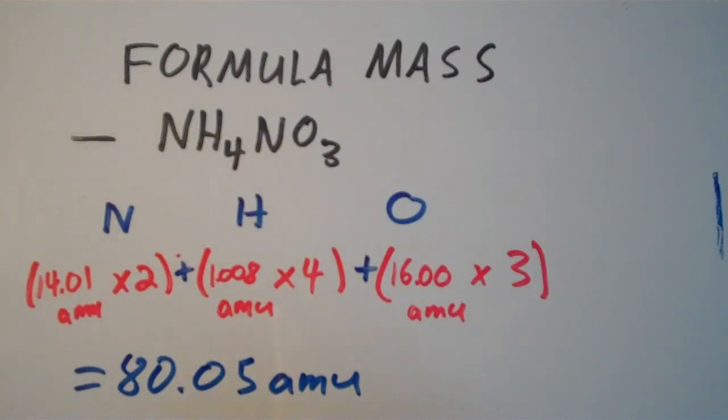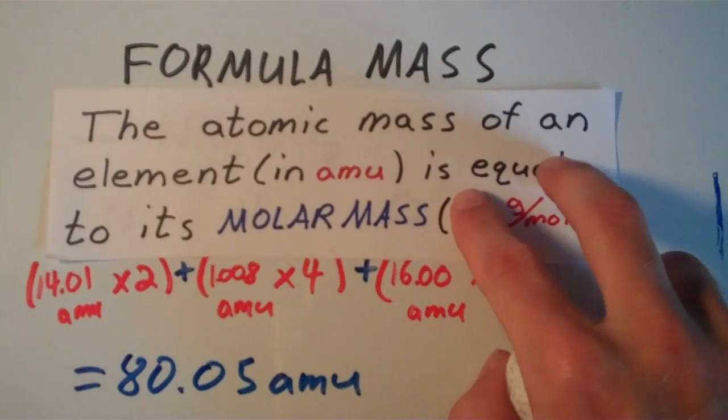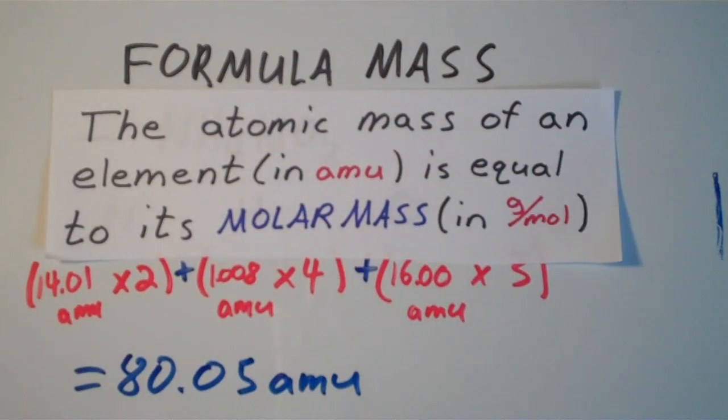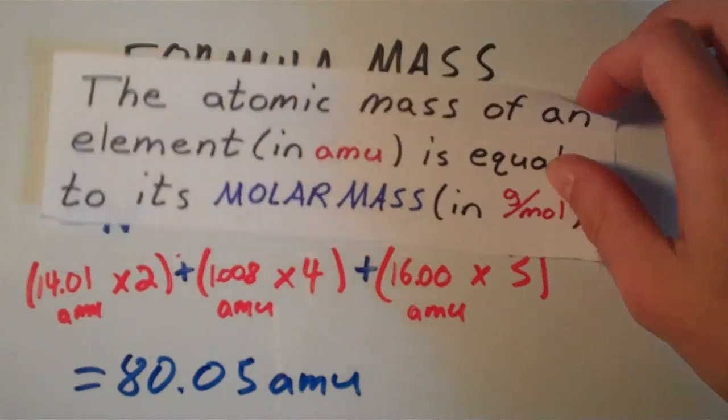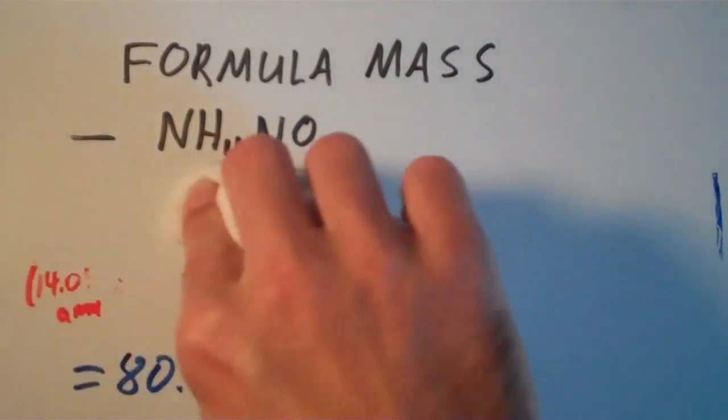And another interesting thing about the formula mass, remember that the atomic mass of an element, which is in AMU, is numerically equal to its molar mass, which is in grams per mole. So therefore, now that we've calculated the formula mass of this compound, we can calculate its molar mass by just a simple conversion.